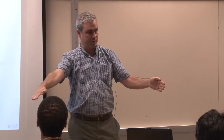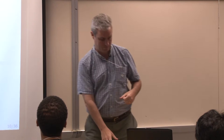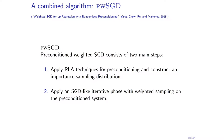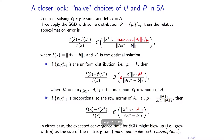If you want a worst-case bound, you need that batch computation — you've got to touch everything, because any single data point could mess everything up. If you make assumptions on the input you don't need that. One assumption could be on the presentation of the input — present rows in random order and things could work. Optimizing the downstream objective with respect to those probabilities is actually a non-trivial problem. Combined algorithm: apply some RLA method to get a sketch, then do the SGD-like iterative phase with weighted sampling and preconditioning at each step.